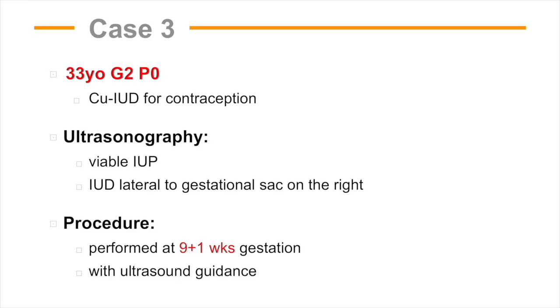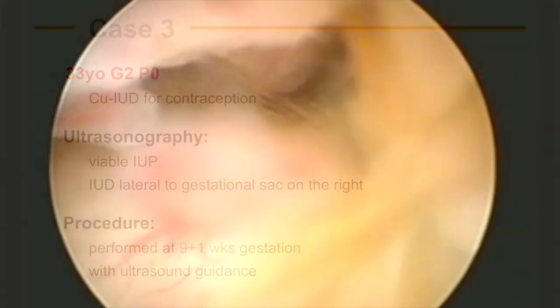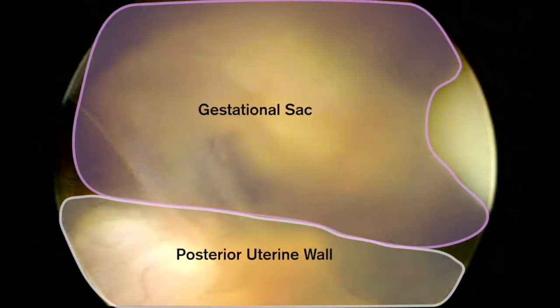Case 3 is a 33-year-old Gravida 2 Para 0 who had a copper IUD removed at 9 weeks and 1 day under ultrasound guidance. In this case, as we obtain entry to the uterine cavity, the hysteroscope is not advanced any further. We then perform a gentle scan from one side of the uterine cavity to the other. This helps facilitate IUD identification without the need to advance the hysteroscope further into the uterine cavity, thus reducing the risk of disrupting the gestational sac.